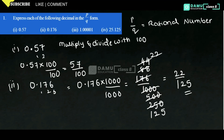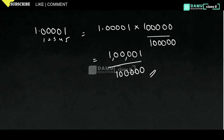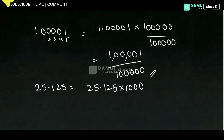Our fourth one is 25.125. So, 25.125 into 1000 — because here 1, 2, 3 decimal places are there, so we multiply and divide with 1000.